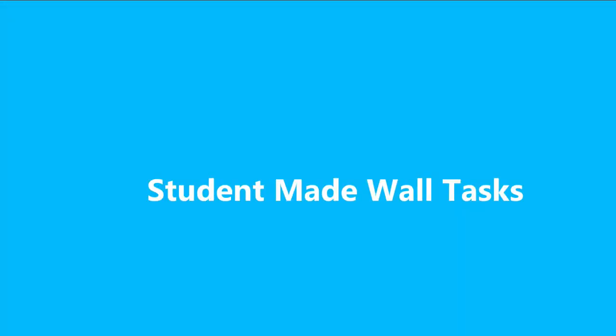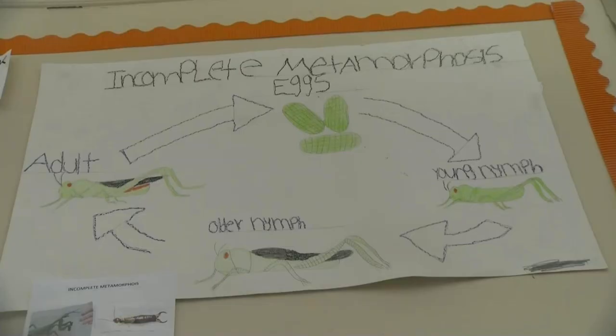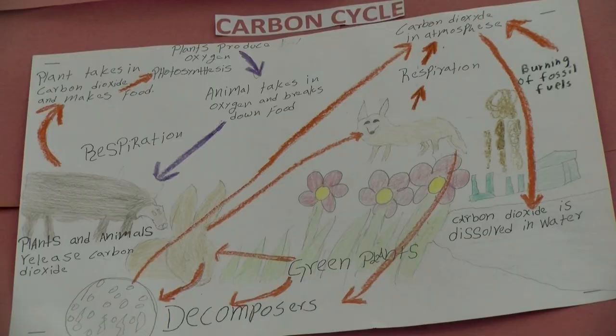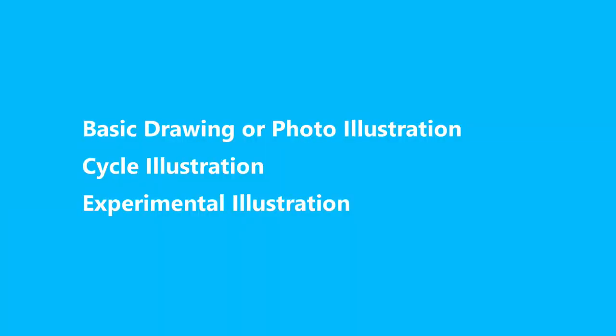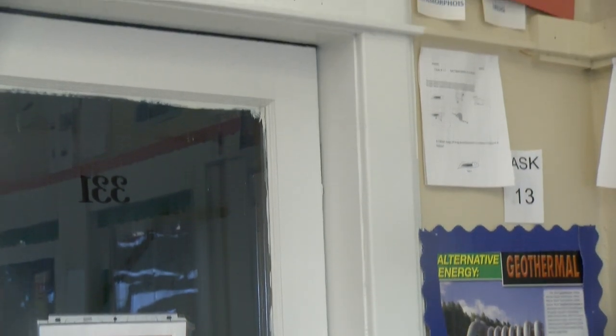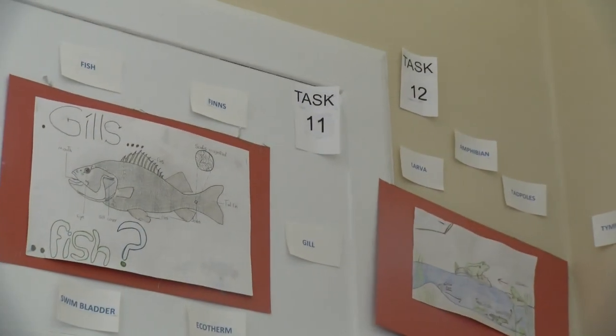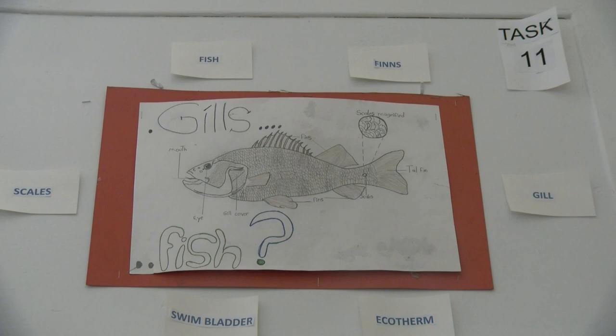Student made wall tasks. A student earns a grade for designing a wall task. Students who drew most of the tasks shown were on the second to fourth grade reading level or spoke Spanish. There are three styles of student made wall tasks. Student tasks are hung on a higher level so they don't get damaged by others.